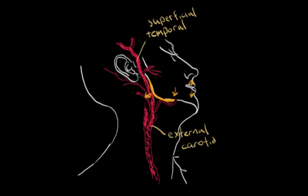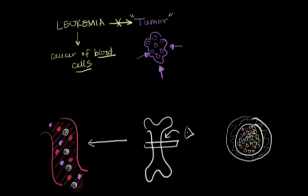This cell that's dividing really rapidly, this leukemia cell, doesn't serve any function like a normal blood cell does, so it doesn't carry oxygen, it doesn't fight off infection or help make blood clots.